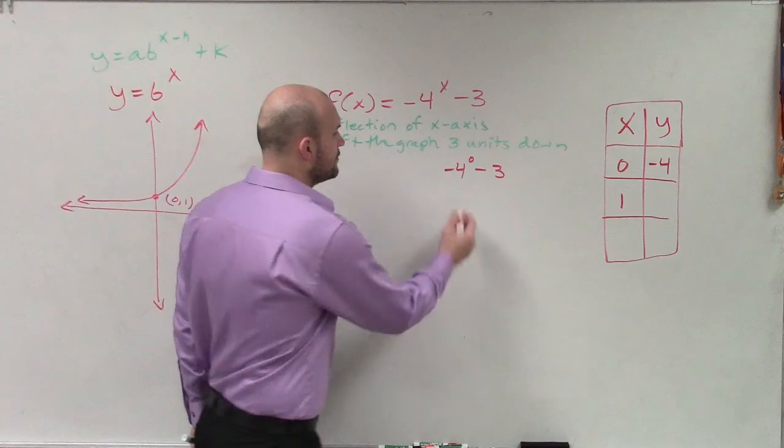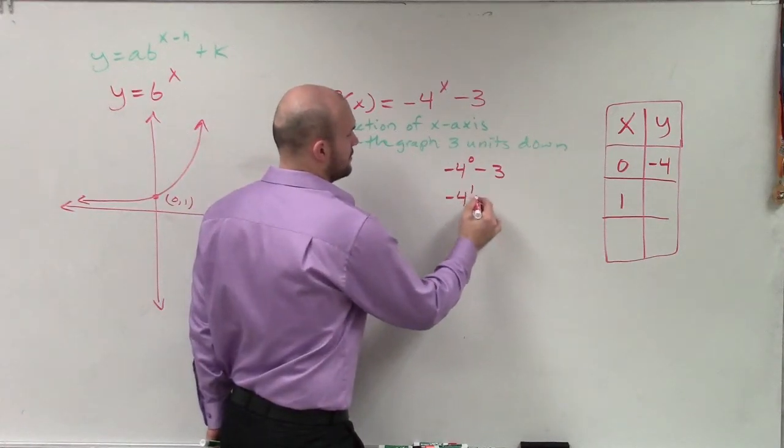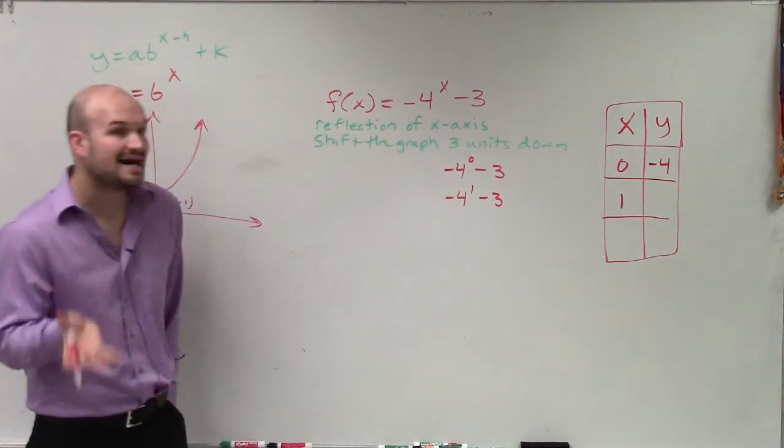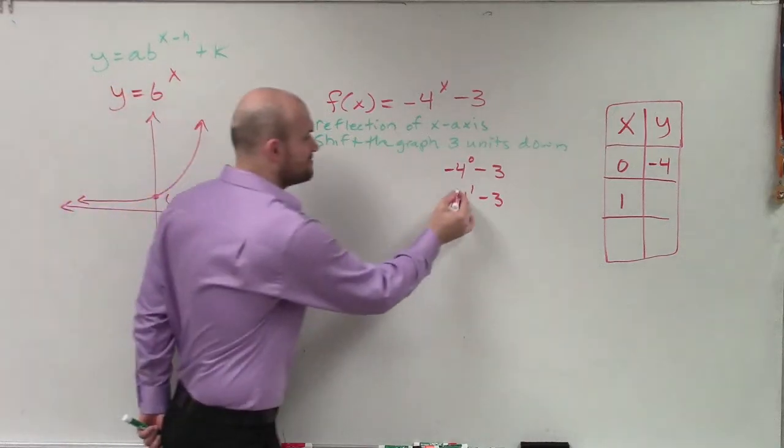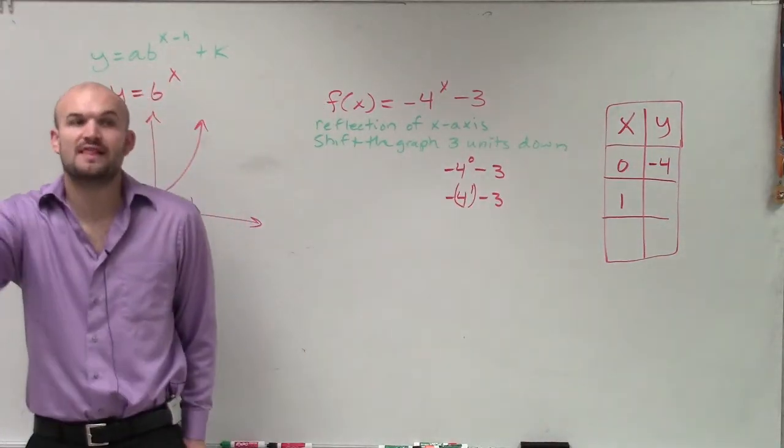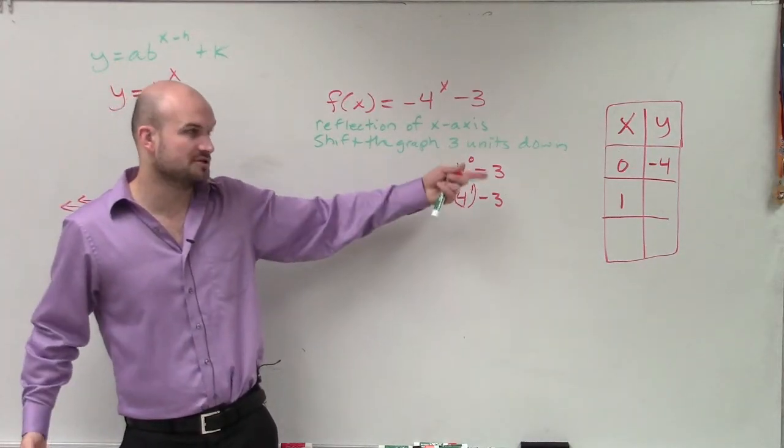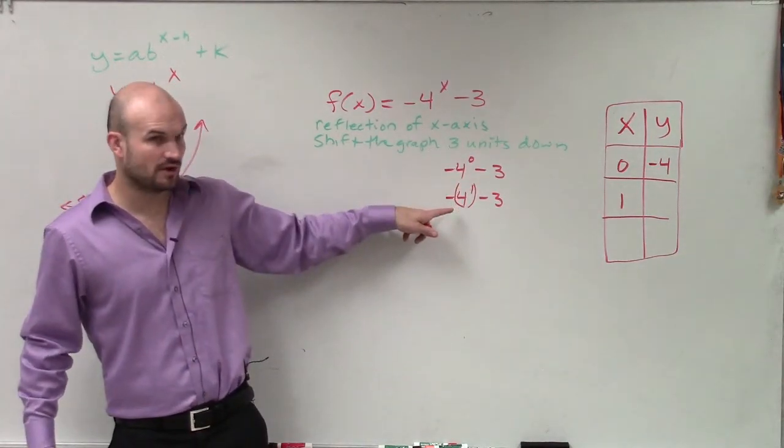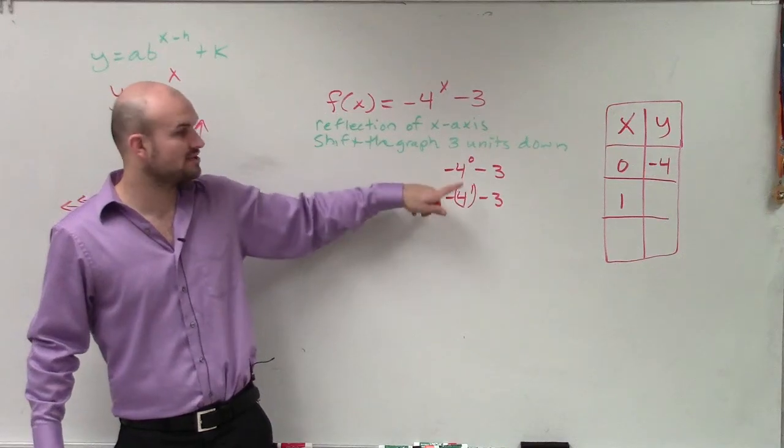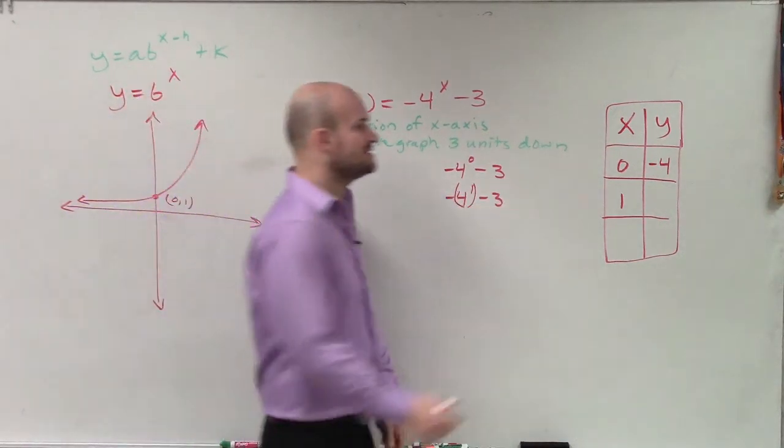Then let's do to the 1 first power. Again, it's positive 4, right? This member order of operations tells you to do exponents first, then multiplication. So it's 4 raised to the first power, which is just 4, times negative 1. So now it's negative 4 minus 3 is negative 7.